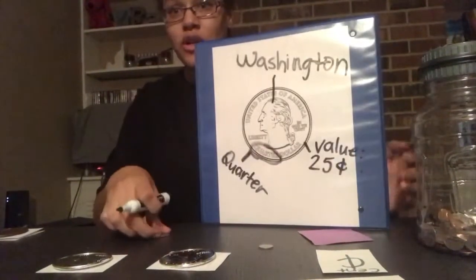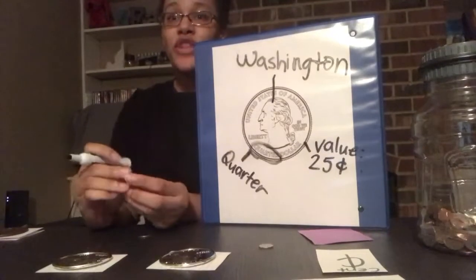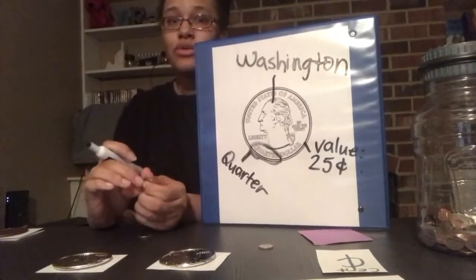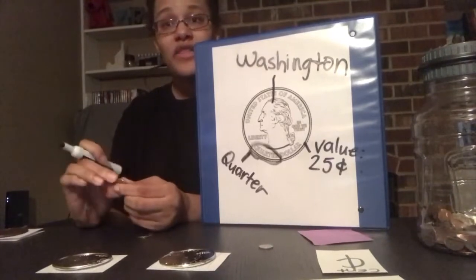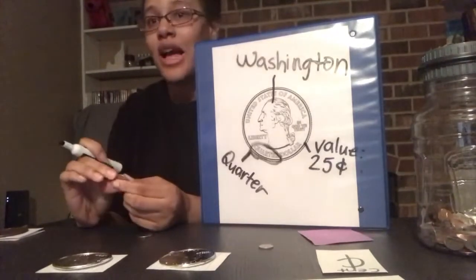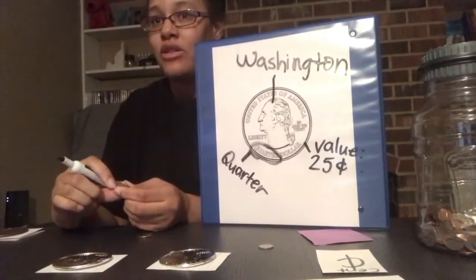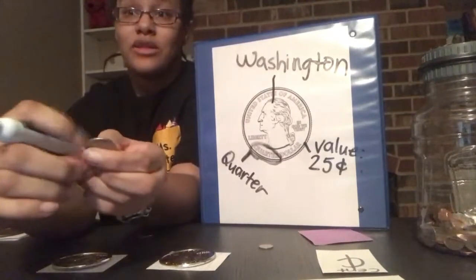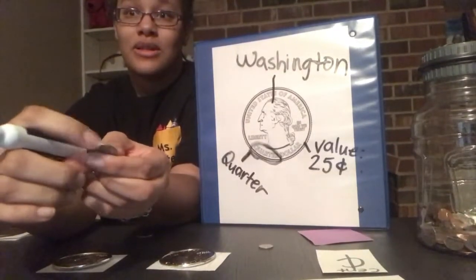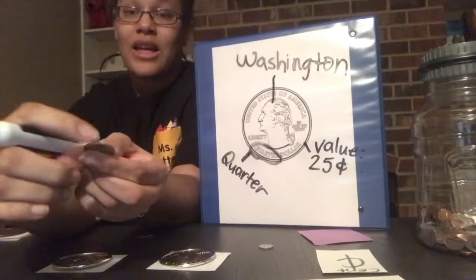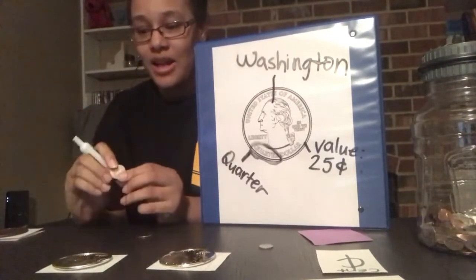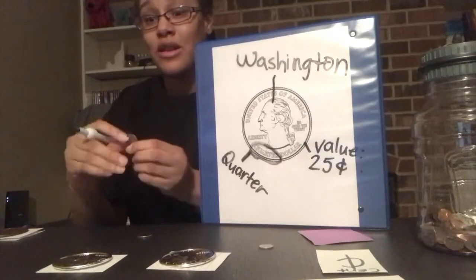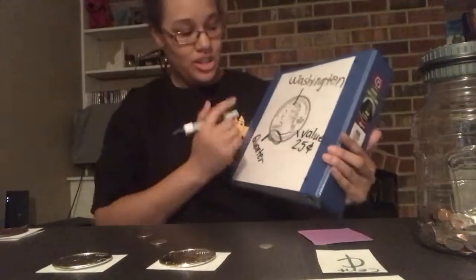Pick up your quarter. Do you feel the outside of the quarter? Does it kind of feel like a dime? Run your nails across if you have any. When I run my nails, I can make this sound just like a dime. So that means on the outside of a quarter are ridges.